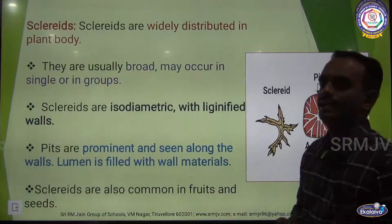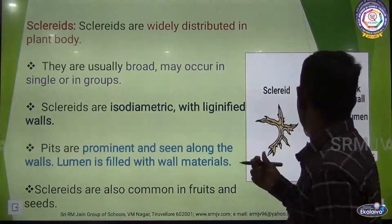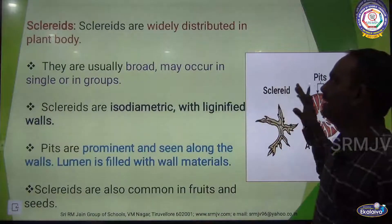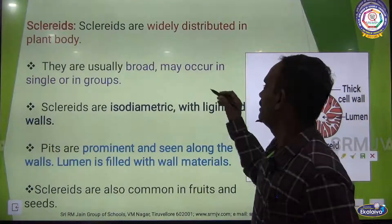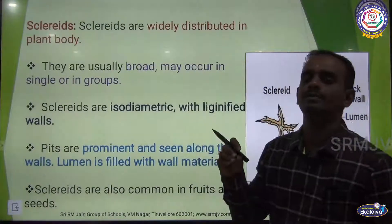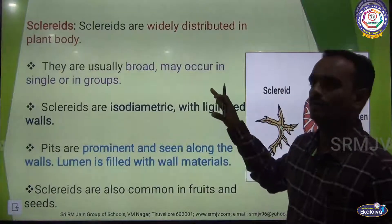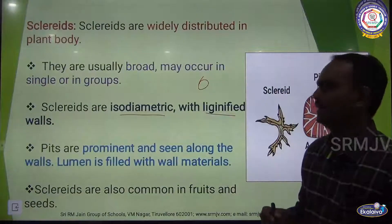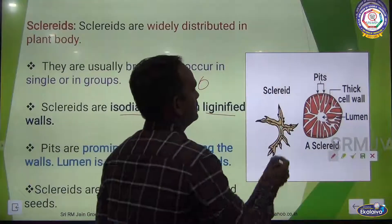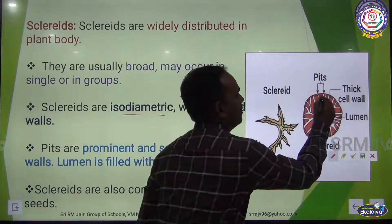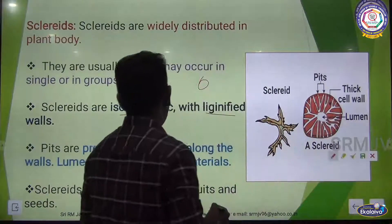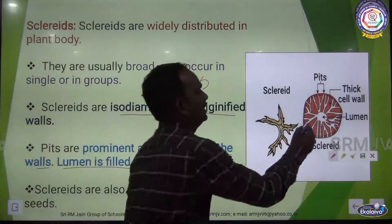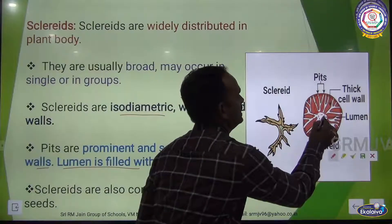The next one is sclerids. Sclerids are widely distributed in the plant body; they are usually broad and may occur singly or in groups. Sclerids are isodiametric with lignified walls. The pits are prominent and seen along with the cell wall. The lumen is filled with wall material.